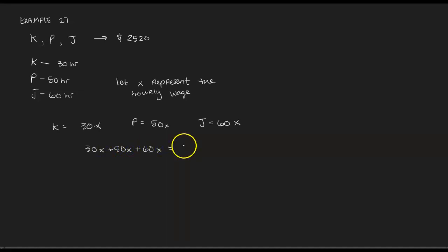And if we add all of their pay together, we should get the total that they got paid, $2,520. When we add the coefficients, 30 plus 50 plus 60, we get 140 total hours put into this job. And then we divide off the 140 so that we can isolate the X, and we find that the hourly wage is $18. So each person is making $18 per hour.